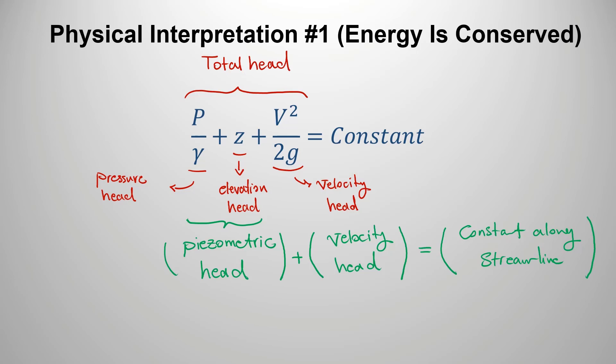The piezometric head plus velocity head is always constant along a streamline. This will help us greatly when solving problems — the piezometric head and velocity head may each change within a pipeline system, but their sum is always constant. This first interpretation is that energy is conserved: the sum of piezometric head and velocity head is constant along the streamline.